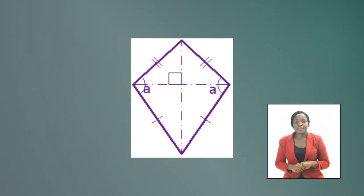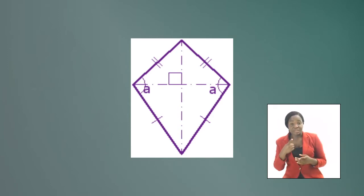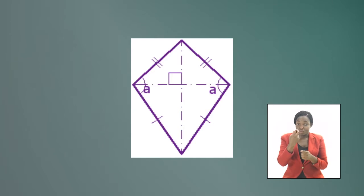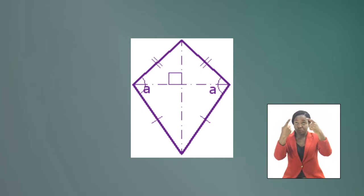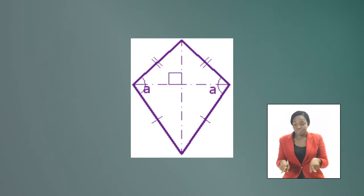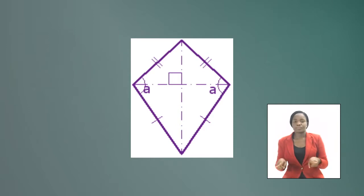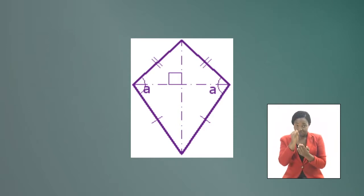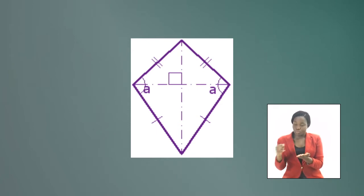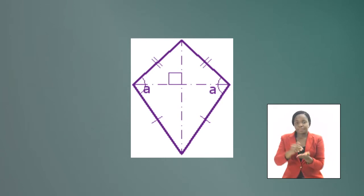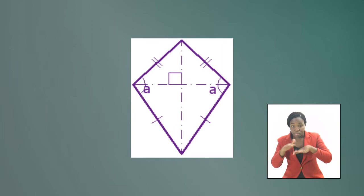To sum up, we can say that a kite has two pairs of sides and each pair is made up of adjacent and touching sides that are the same length. One pair of opposite angles are equal. The diagonals, the dashed lines you see here, cross at right angles, and one of the diagonals cuts the other exactly in half. A little later, we will discuss the area and perimeter of a kite.